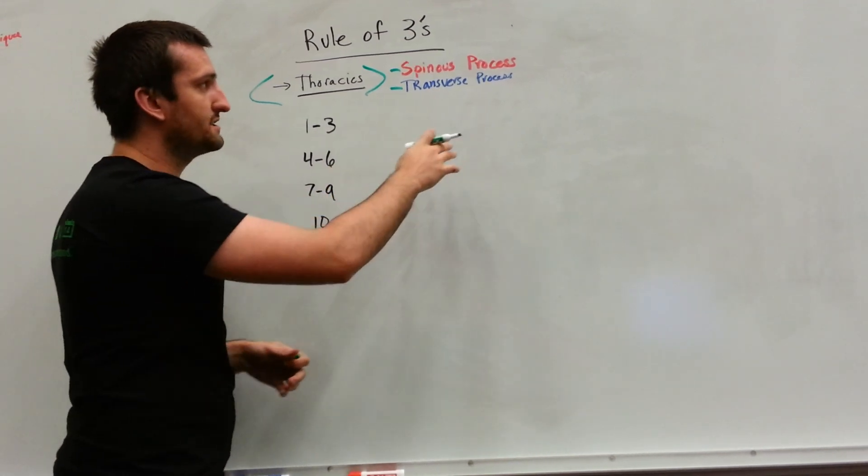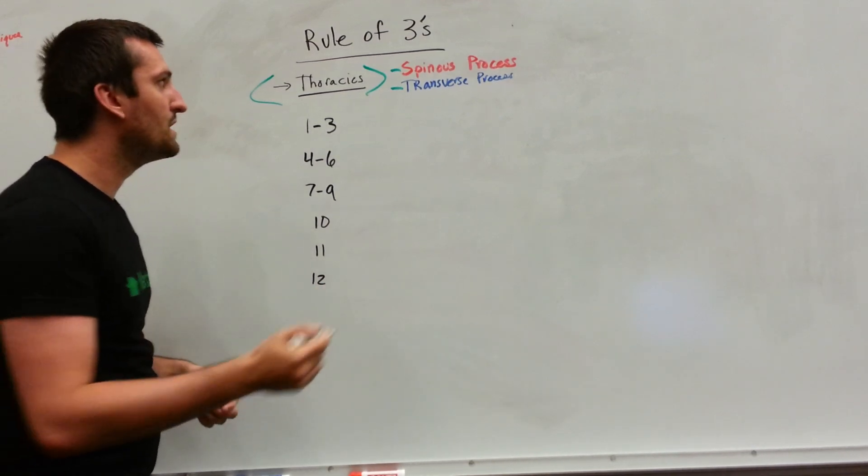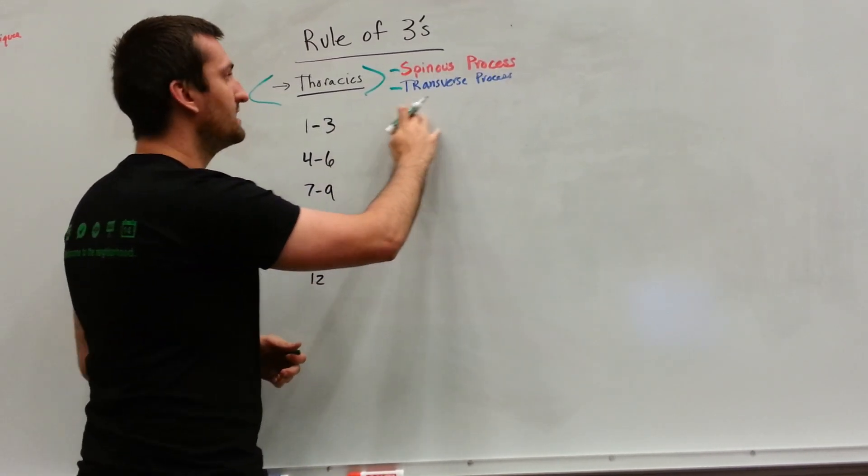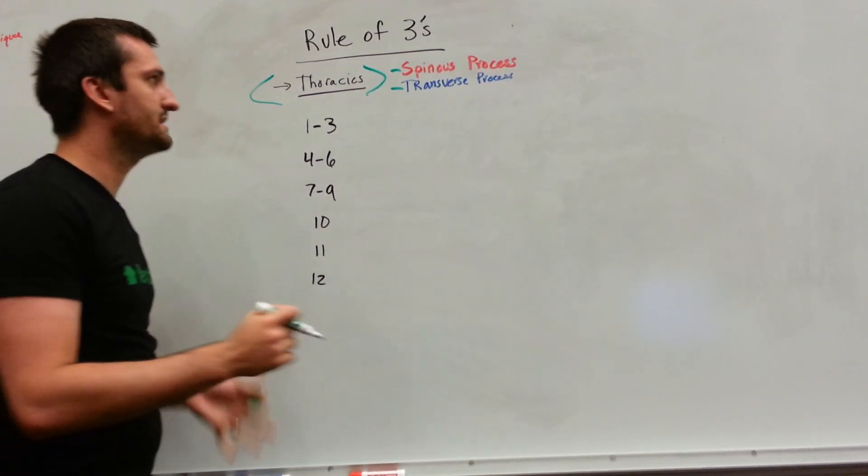And then the transverse process, there's going to be two of them. They'll be the little horns on either side of the vertebral body. So the transverse processes are always going to be at the level of the vertebral level, the vertebral segment.